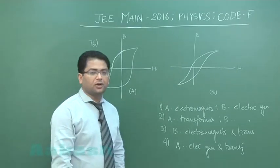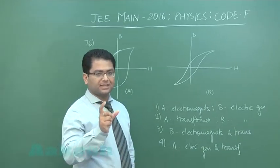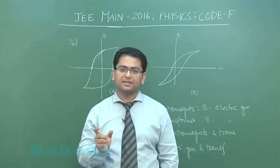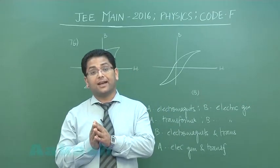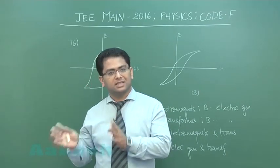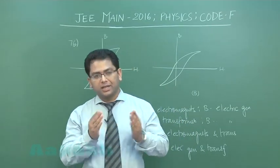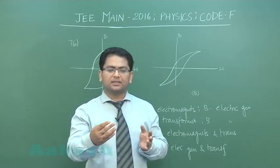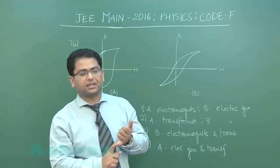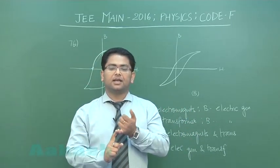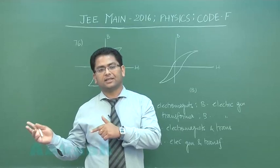Question number 76 is from Magnetic Properties of Matter, which is a topic exclusively in JEE Mains and not in JEE Advanced. At the end of the total discussion you will see at least three to four questions from those topics specifically made for JEE Mains. JEE Mains wants to show its distinct identity — there are four or five topics in physics like semiconductors, magnetism, and principles of communication that are only in JEE Mains.